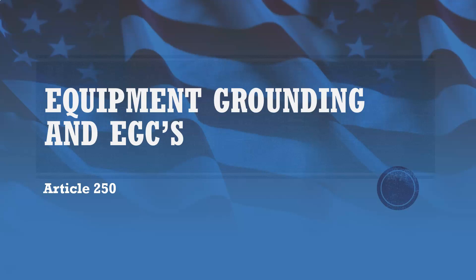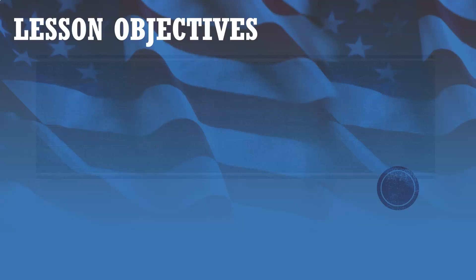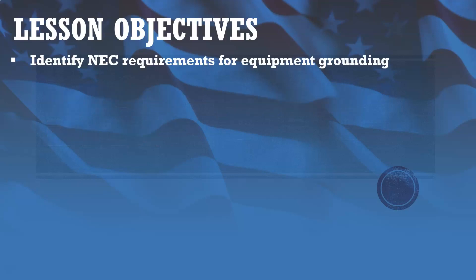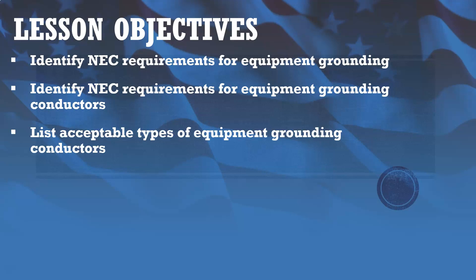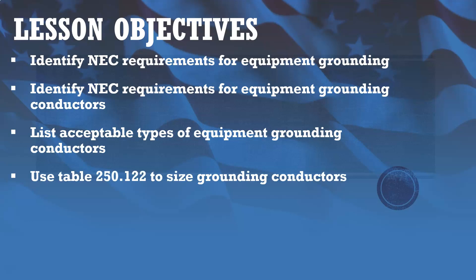This is going to be our sixth and final lecture for Module 2. In this lecture, we're going to be talking about equipment grounding and equipment grounding conductors as they pertain to Article 250. Our objectives are to identify NEC requirements for equipment grounding, identify NEC requirements for equipment grounding conductors, list acceptable types of equipment grounding conductors, and use Table 250.122 to size grounding conductors.